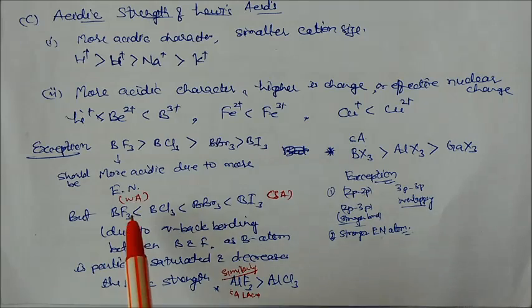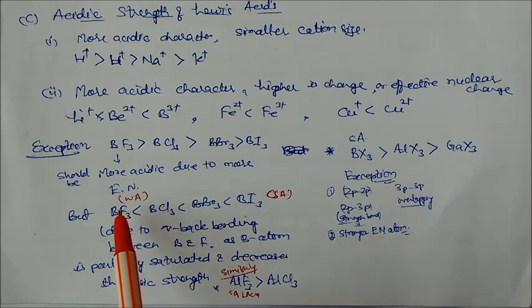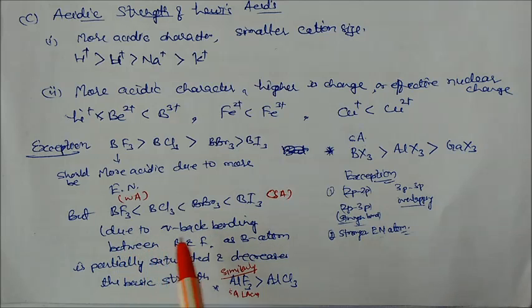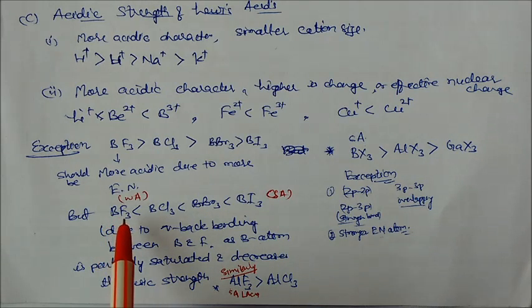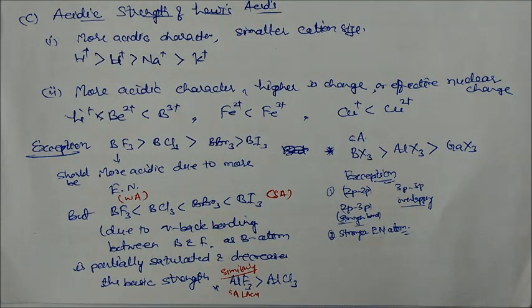Why is this less acidic? Because in this case, in case of BF3, this is acting as a weak acid due to pi back bonding between the boron and fluorine. So boron atom is partially saturated and decreases the basic strength. That's why it becomes less acidic because of the some electrons from the lone pairs on the fluorine are back bonded with the boron atoms and decreases the acidic strength.